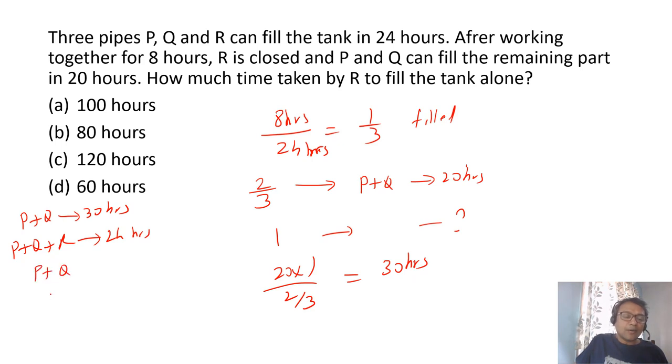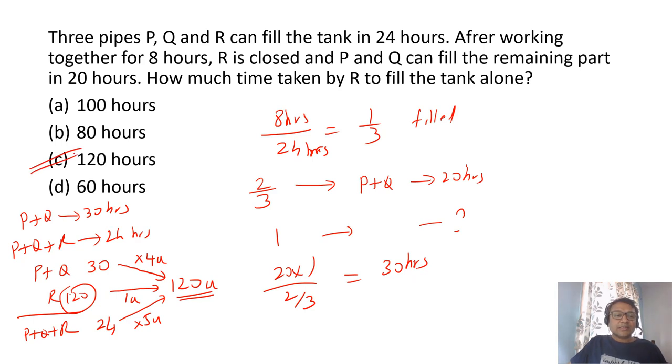Let's say LCM method. So P plus Q is 30 hours. P plus Q plus R is 24 hours. If you look at LCM of the 2 will be 120. 30, 4's are 120. We assume 120 units of work. So P plus Q do 4 units of work. All three put together do 5 units of work. 24, 5's are 120. Which means R does only one unit of work. So since it does one unit of work, it will take 120 upon 1, 120 hours to do the work. Which is C option.